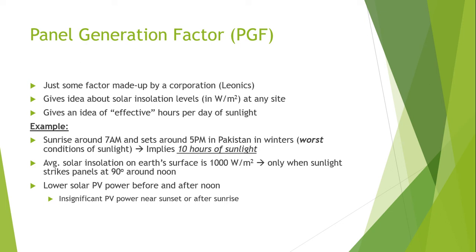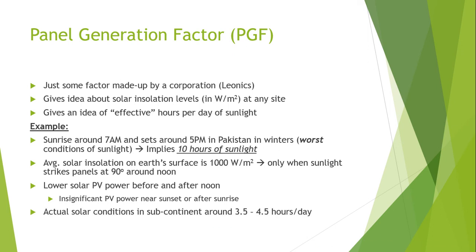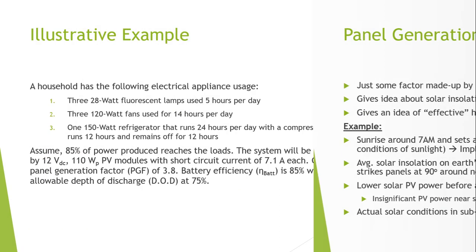Insignificant photovoltaic power is observed near sunrise and sunset because at those times the solar intensity or sunlight is less. Actual solar conditions in the subcontinent are around 3.5 to 4.5 effective hours per day.